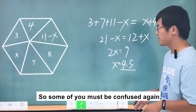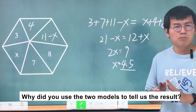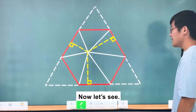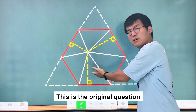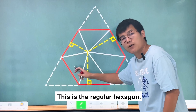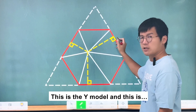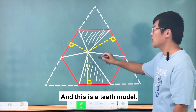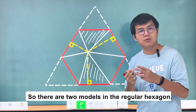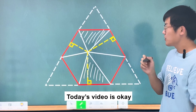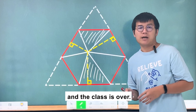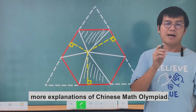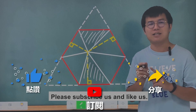Some of you might wonder why we used two models. Looking back: the regular hexagon problem uses the Y model and the tease model — there are two models embedded in the regular hexagon. Today's class is over. Thank you for watching. If you like this content and want more explanations of Chinese Math Olympiad problems, please subscribe and like. Thank you.